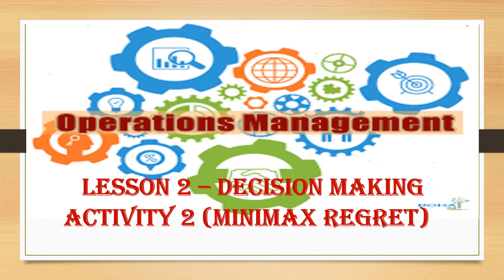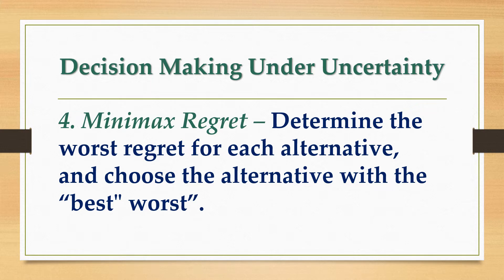In order for you to know how to decide under the minimax regret criterion, we will be using the same table — Lucas Company — for our minimax regret discussion. Under minimax regret, we are going to compute first for the regret, because we have to determine the worst regret for each alternative and choose the alternative with the best worst. What we are computing are the amounts that we are supposed to earn, and that represents our regret — our opportunity cost, or our benefits forgone.